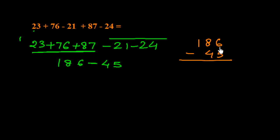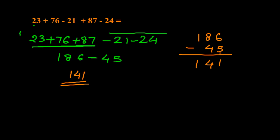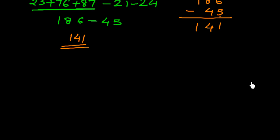So 6 minus 5 is 1, 8 minus 4 is 4, and we bring down 1, giving us 141. In this way we can simplify series of numbers involving both addition and subtraction.